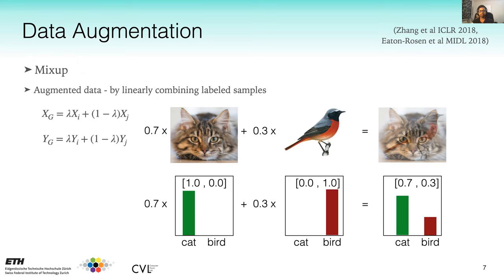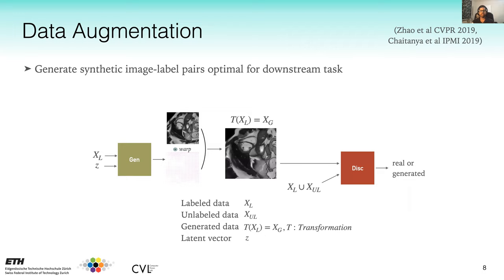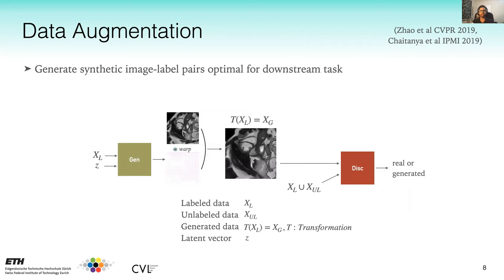Another possible approach is to use GANs to generate synthetic image-label pairs. Recent works that show good performance generate images optimal with respect to the task — for example, given an image and a latent vector, the generator produces a deformation field applied to the image to create a deformed image. This is passed to a discriminator to match the population of labeled and unlabeled images, and also to the segmentation network so the generator learns to produce images useful for segmentation rather than arbitrary synthetic images.